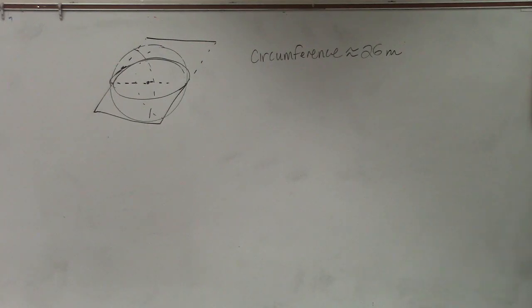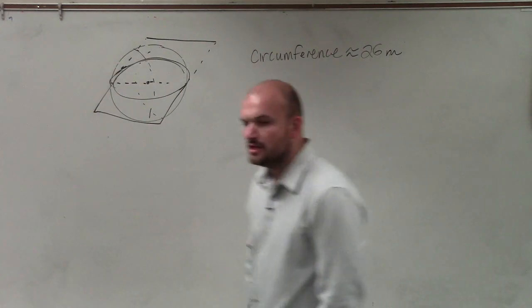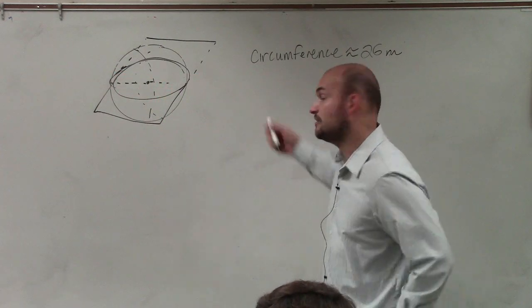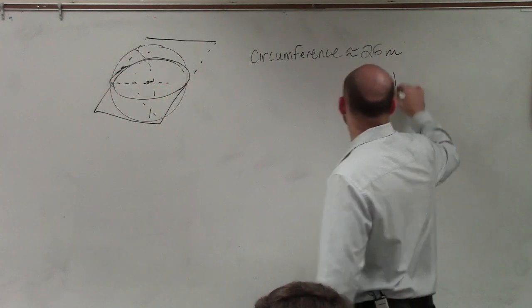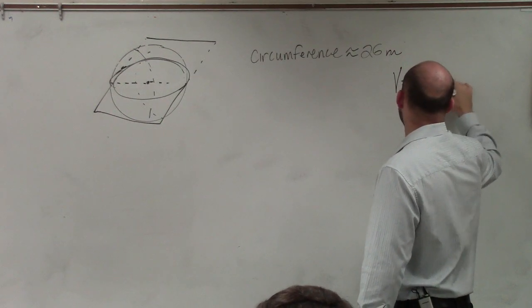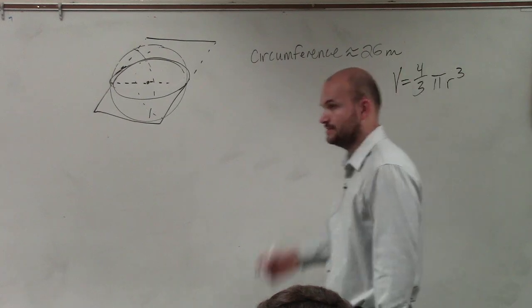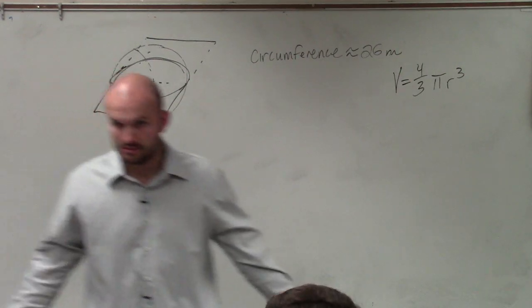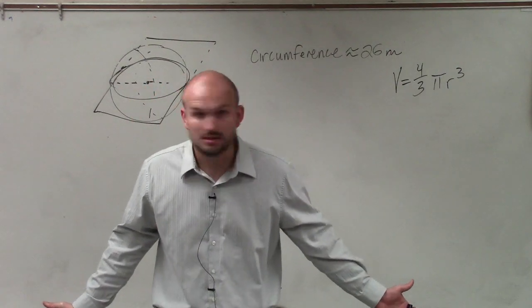Or I'm sorry, the volume, right? So to find the volume in this case, first of all, we need to use the formula, which is volume equals 4 thirds pi r cubed. That's our formula for the volume, correct? Yes? OK.